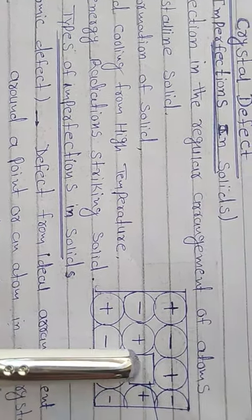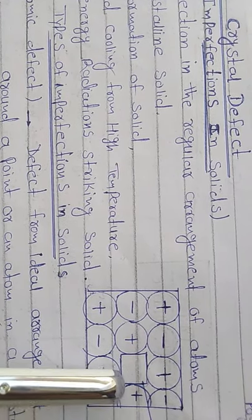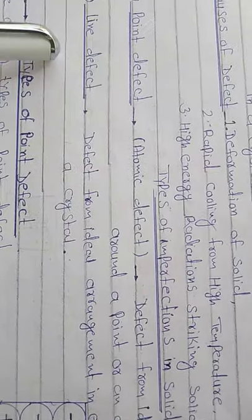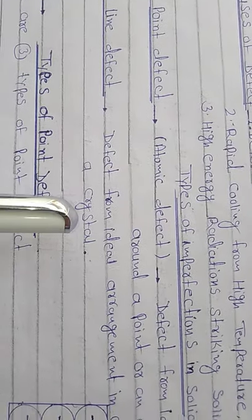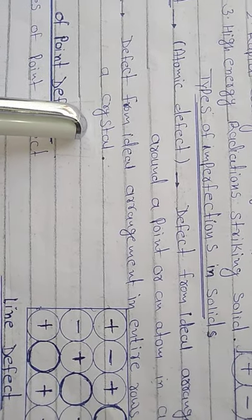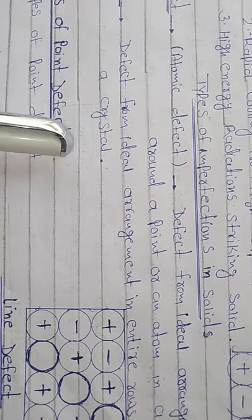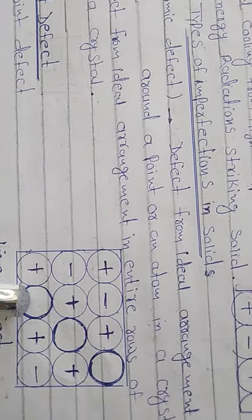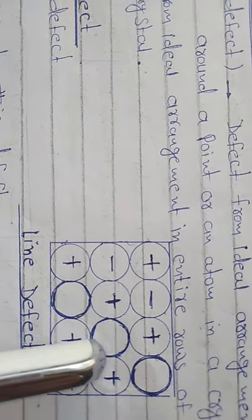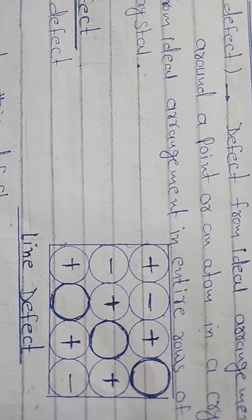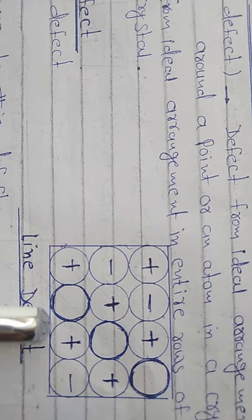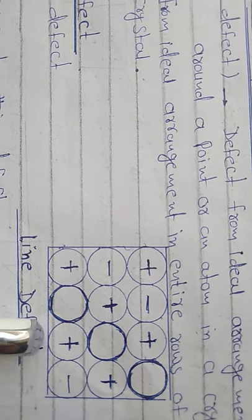The other type is line defect — a defect from the ideal arrangement in an entire row of a crystal. When the entire row of a crystal is around the defect, we call it a line defect. Line defect is not in our syllabus; we are going to discuss only point defects.